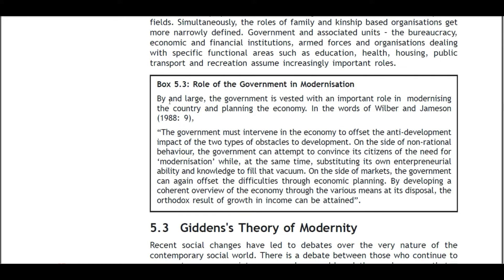Box 5.3: Role of the Government in Modernization. The government is vested with an important role in modernizing the country. In the words of Wilber and Jameson, the government must intervene in the economy to offset the anti-development impact of obstacles to development. On the side of non-rational behavior, the government can attempt to convince its citizens of the need for modernization while substituting its own entrepreneurial ability to fill that vacuum. On the side of markets, it can develop a coherent economic plan to obtain orthodox results of growth in income.